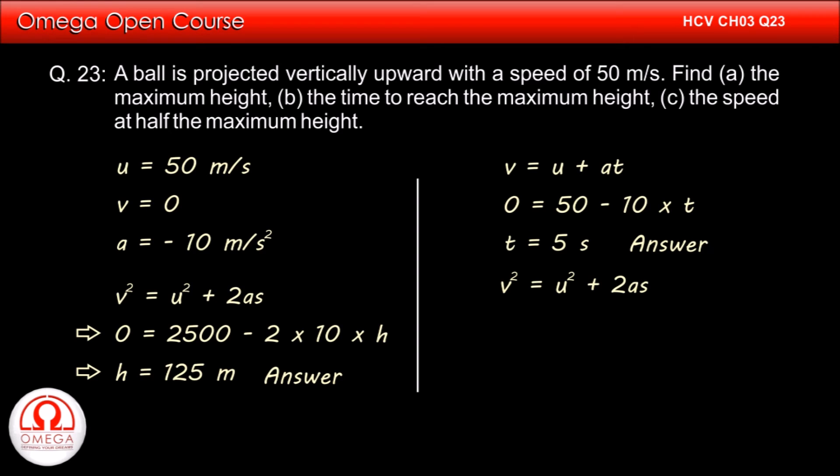Putting initial speed as 50 meters per second, acceleration -10 meters per second squared, and displacement 125/2 meters, we get v² = 2500 - 2 × 10 × 125/2.